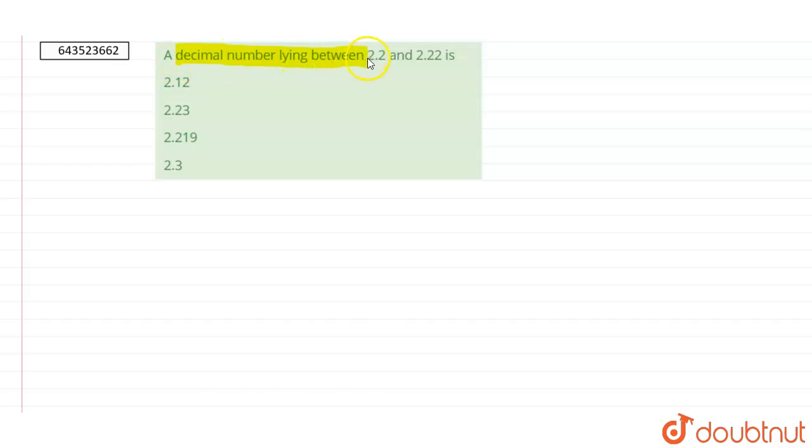The given numbers are 2.2 and 2.22. Now these two numbers are not like decimal numbers.